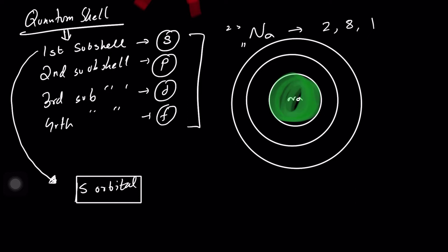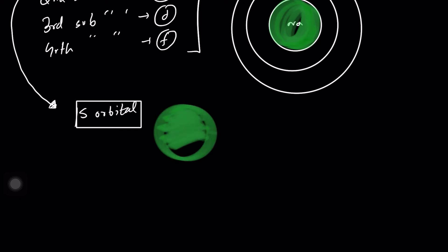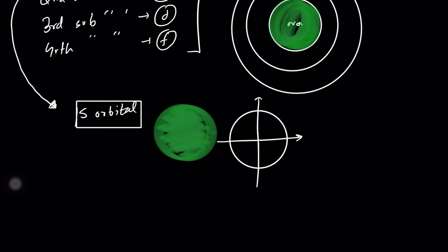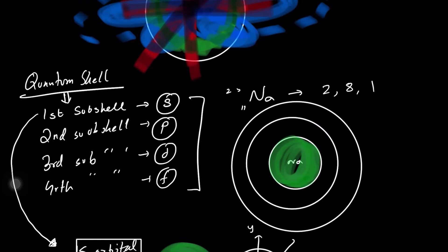An S orbital looks like a regular sphere — a spherical shell. If you're thinking in terms of dimensions, it's just a spherical shape along X and Y. To represent the electronic configuration of sodium in terms of orbitals, we start by writing 1 for the principal shell.